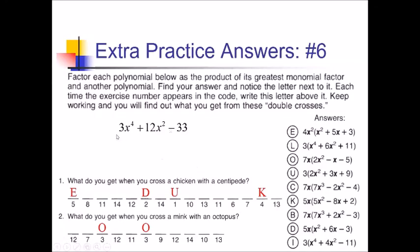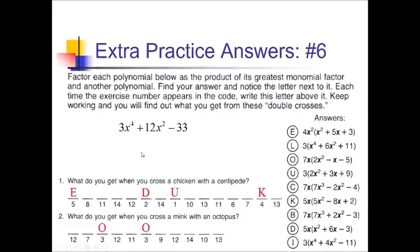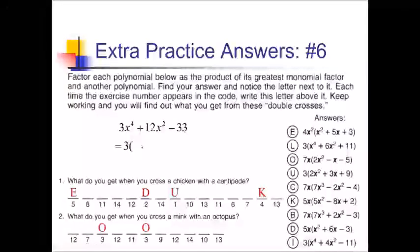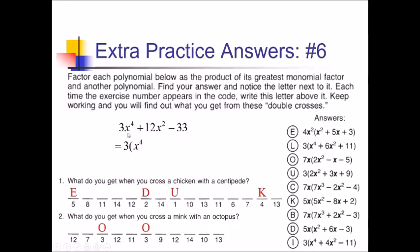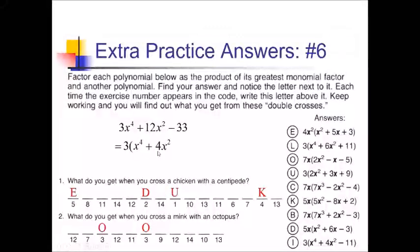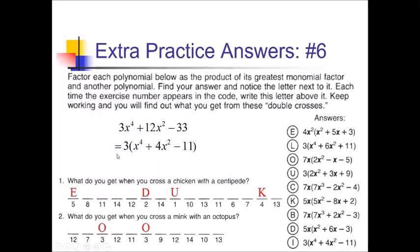For problem 6, between 3, 12, and negative 33, I can take out a common factor of 3. I only have x's on the first two terms, so I can't take out any variables. Taking a 3 out: 3x to the fourth becomes x to the fourth; 12 divided by 3 is 4, giving plus 4x squared; and negative 33 divided by 3 is negative 11. That's choice I, going into spot number 6.